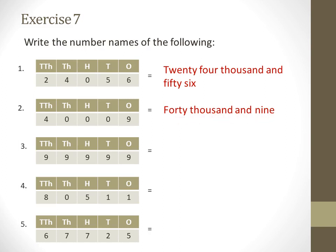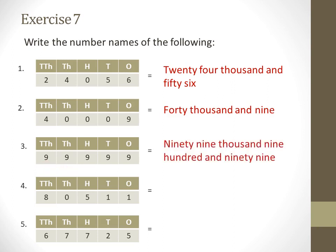Next, we have all 9s. Starting from the thousands period: under the thousands period we have 99, so how many thousands? 99,000. Then how many hundreds? 900. Then under the tens and ones sections we have 99. So the number name becomes ninety-nine thousand nine hundred and ninety-nine — 99,999.